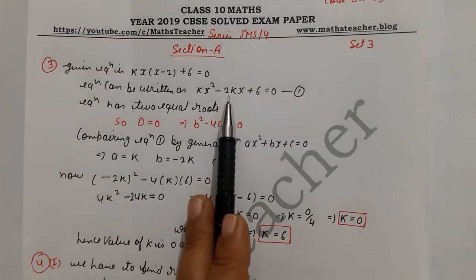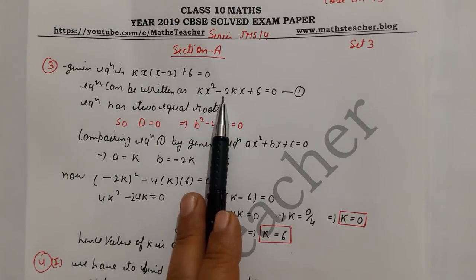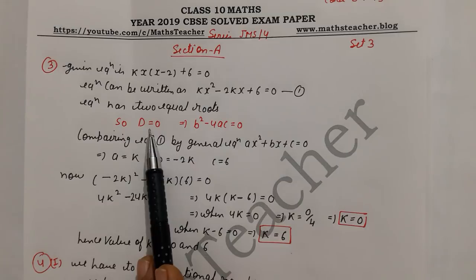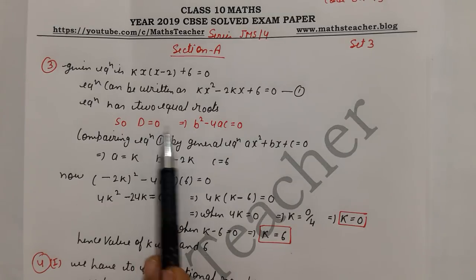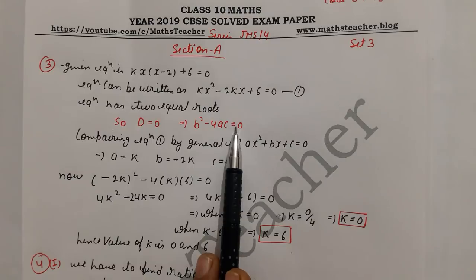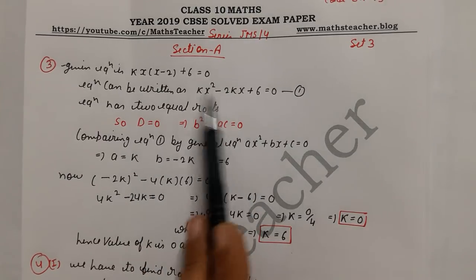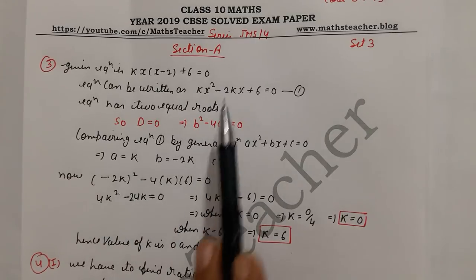In the first equation, kx multiplied by kx gives kx², then kx multiplied by -2 gives -2kx. The equal roots condition is that discriminant d = 0, which means b² - 4ac = 0. Now we need a, b, c values. Compare the general equation with this equation: a = k, b = -2k, c = 6.